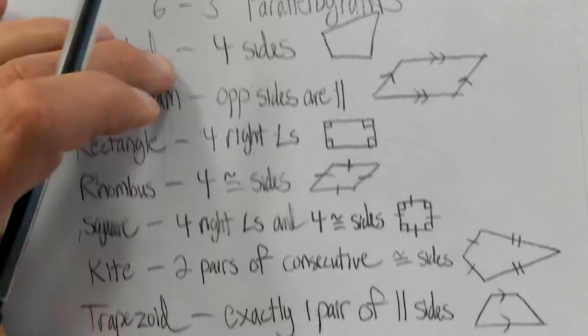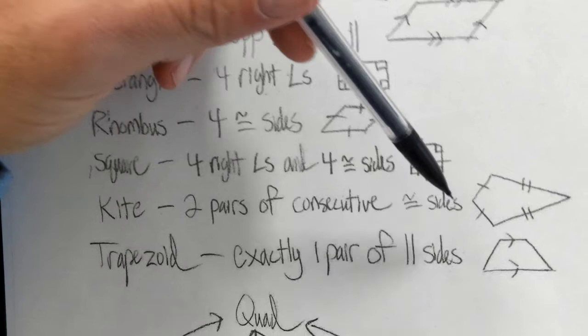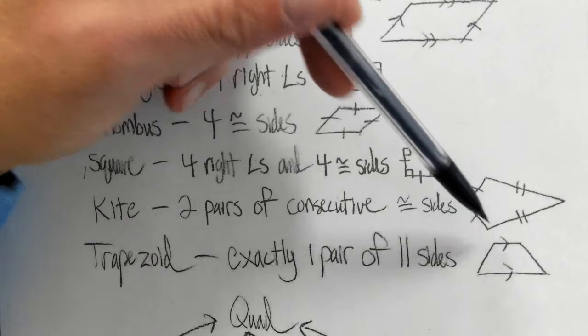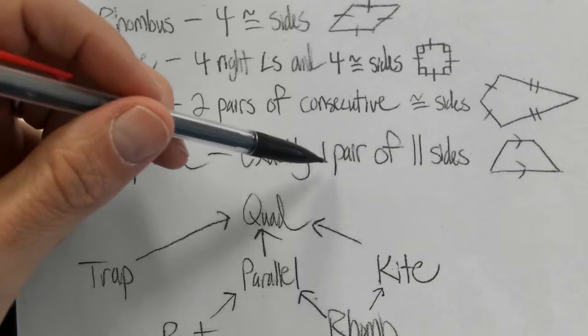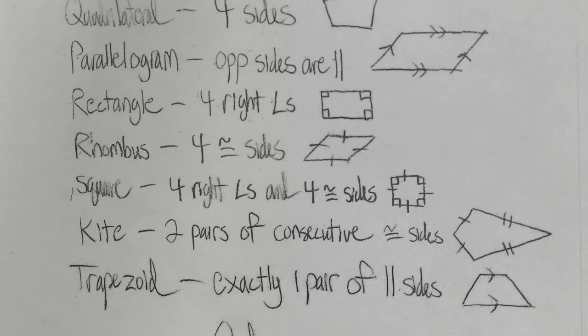We have a kite. A kite has two pairs of consecutive congruent sides — those sides have to be consecutive, meaning next to each other. You can't have the opposite sides congruent; it's got to have two pairs of consecutive sides congruent. Then we have a trapezoid, and in a trapezoid you have exactly one pair of parallel sides. So these are the different types of four-sided figures, the different types of quadrilaterals that we have.